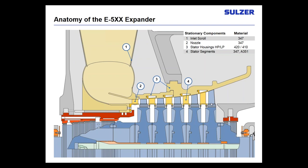Our stator segments — we'll go over improvements we've made on those. The HP seal housing actually entails three pieces: an outer housing, an HP seal insert shown in light red, and the honeycombs in gray. The honeycombs get brazed into this seal insert, which then gets attached to the seal housing. On the LP side, there is no honeycomb insert — instead, the honeycomb is brazed directly to the seal housing itself.